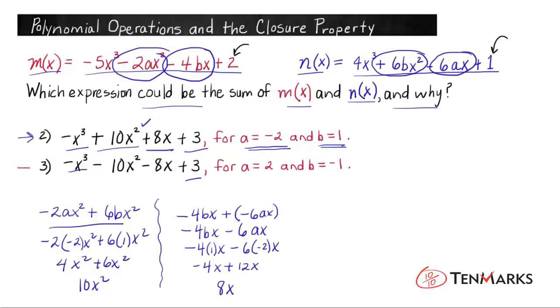Now let's focus on option 3. I'm going to do that over here in this space. What we're checking is this -10x². Now for new values of a, we're looking for when a = 2 and b = -1. Let's see if this one works. We're going to have, again, -2ax² + 6bx² when we collect the terms from m(x) and n(x).